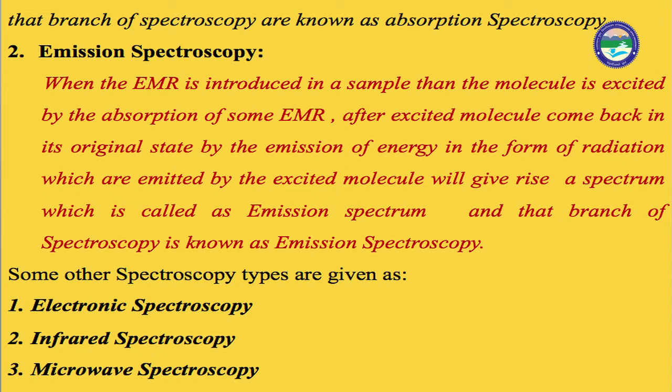The basic requirement for spectroscopy — the most important thing — is electromagnetic radiation. Now let us discuss what electromagnetic radiation is and what its nature and properties are. The name 'electromagnetic' is made of two words: 'electro' (electric field) and 'magnetic' (magnetic field). Electromagnetic radiation is a special type of radiation with a particular composition — it consists of different types of radiation. Let me show you a figure called the electromagnetic spectrum.